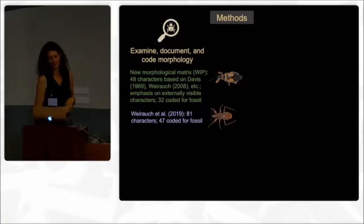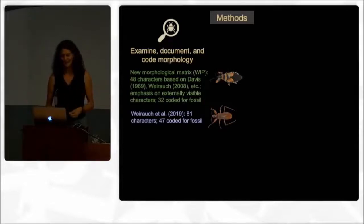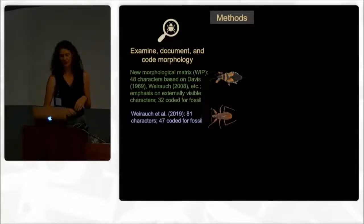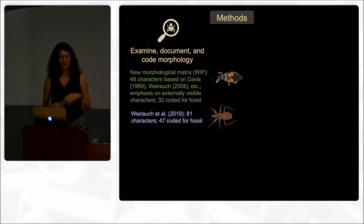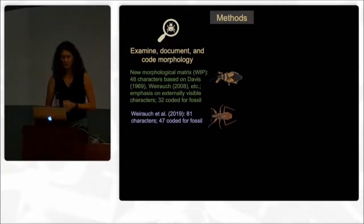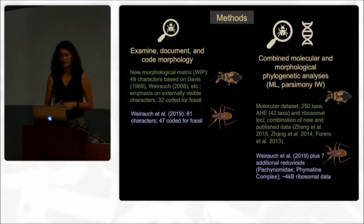In order to do so, we examined, documented, and coded the morphology. In the case of the possibly Halpachturine fossil, we created a new morphological matrix — work in progress — based on 48 characters, with an emphasis on externally visible characters that could be coded on a fossil. At this point 32 of these 48 are coded for the fossil. For the second data set, we recycled the morphological matrix of 81 characters that we published in 2019, and 47 of these 81 characters were coded for the fossil.